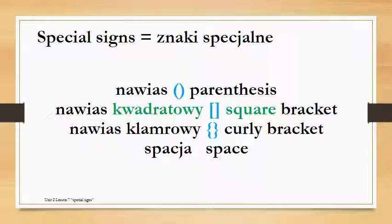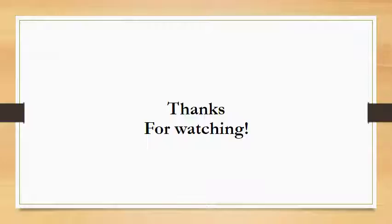The last one we're going to cover today is the special sign for space. We do not really have our own word for it, so we just took the English word space and made it sound a little more Polish — it's called spacja. So that would be it. Now you know the Polish names for all the special signs. Thank you for watching and see you next time.